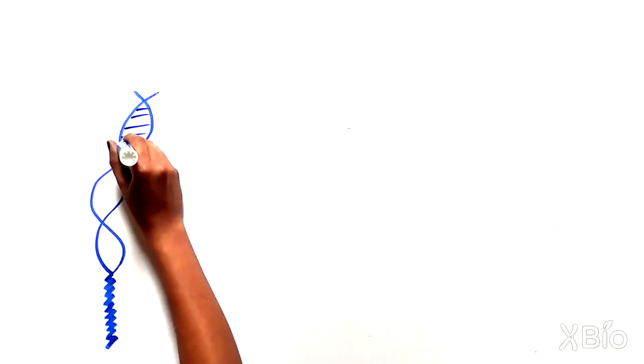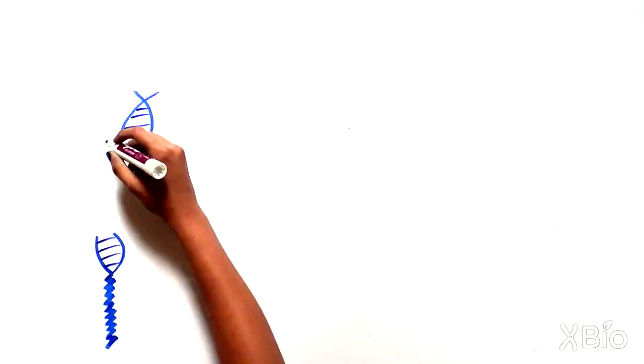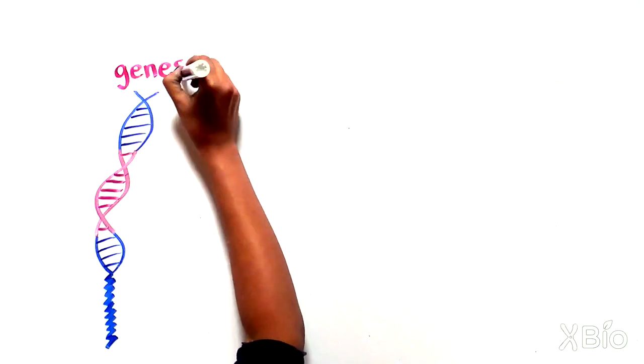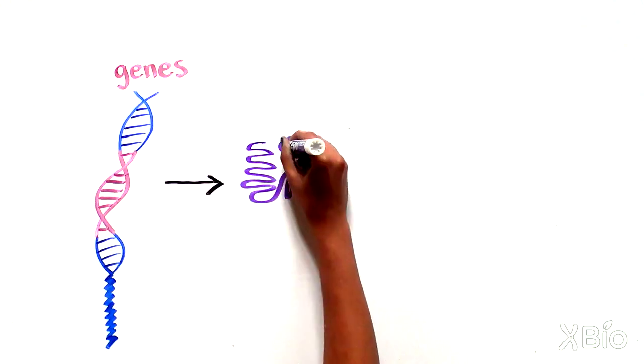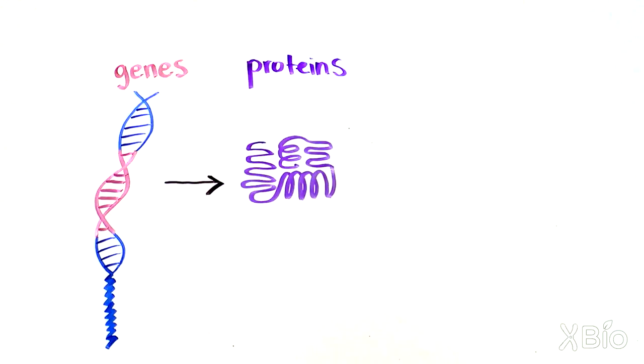Let's look closer at the structure of a chromosome. Within the long DNA strand, there are regions called genes that contain the instructions to make proteins. There are around 22,000 protein coding genes in humans.